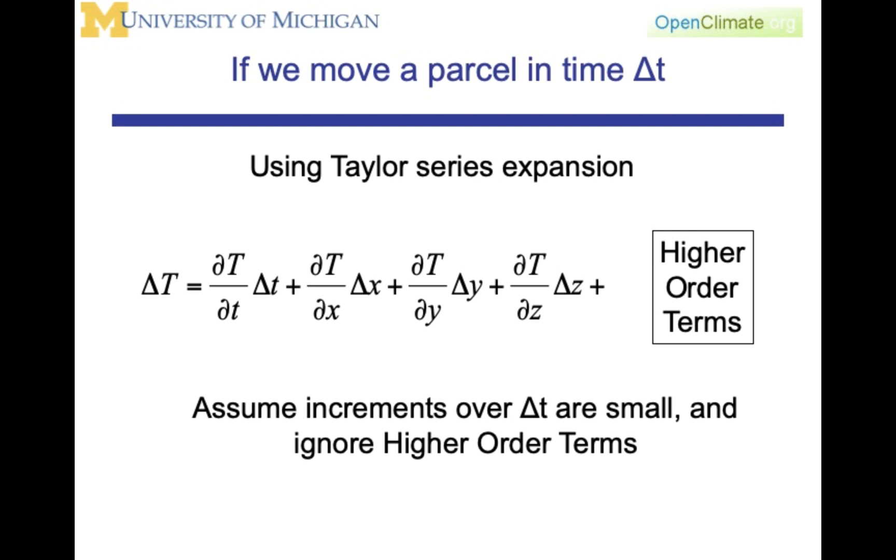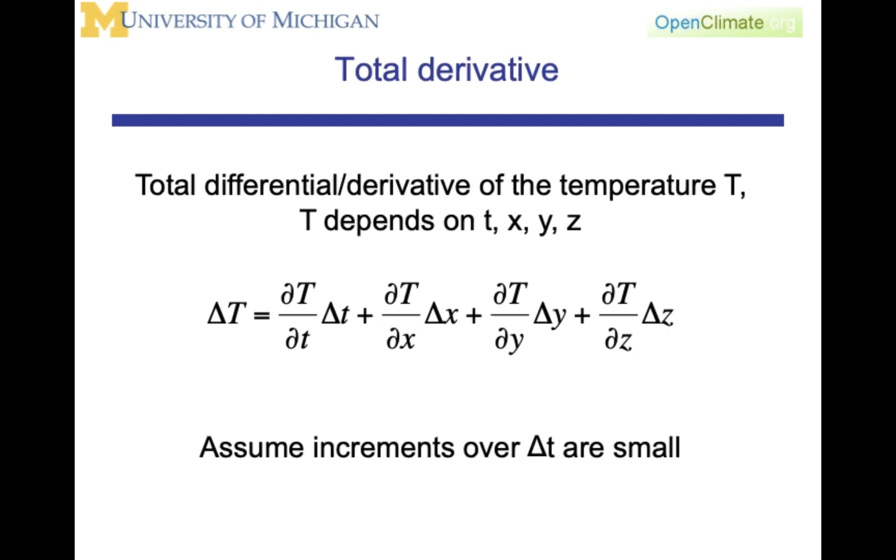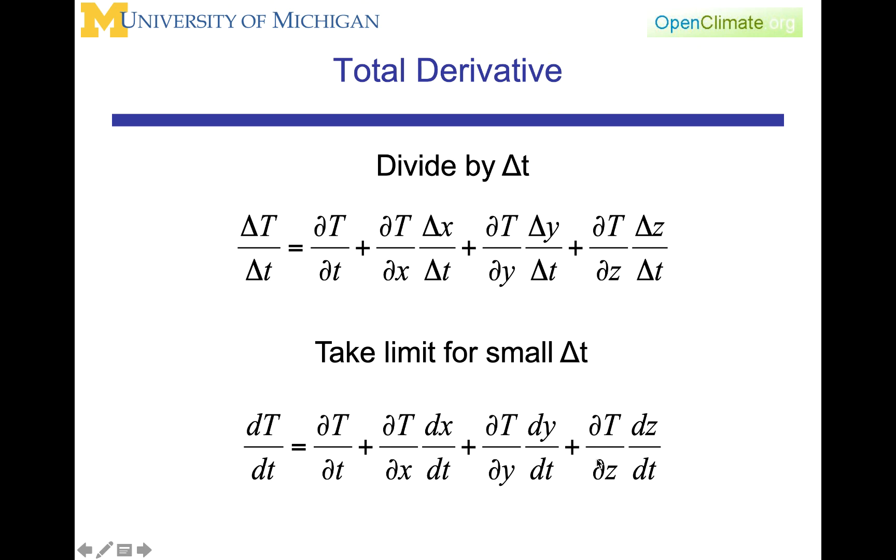As we look at a change in the temperature, we're going to relate this to a change that's purely in time, and then a change that has the representation of space. The total differential, or the total derivative, of the temperature t depends on t, x, y, and z. So delta T is as we represented it on the previous view graphs. We're going to divide by delta t and assume that delta t is small. When we do this division by delta t and take the limits as both delta t and delta x go to zero together.